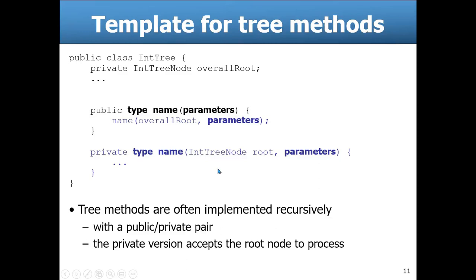The private version is all the same except there's an additional parameter, and for us it's going to be a node — an IntTreeNode. You can call it root, you can call it current, or just node. It's an IntTreeNode, and whatever normal parameters were in there come at the end after node.